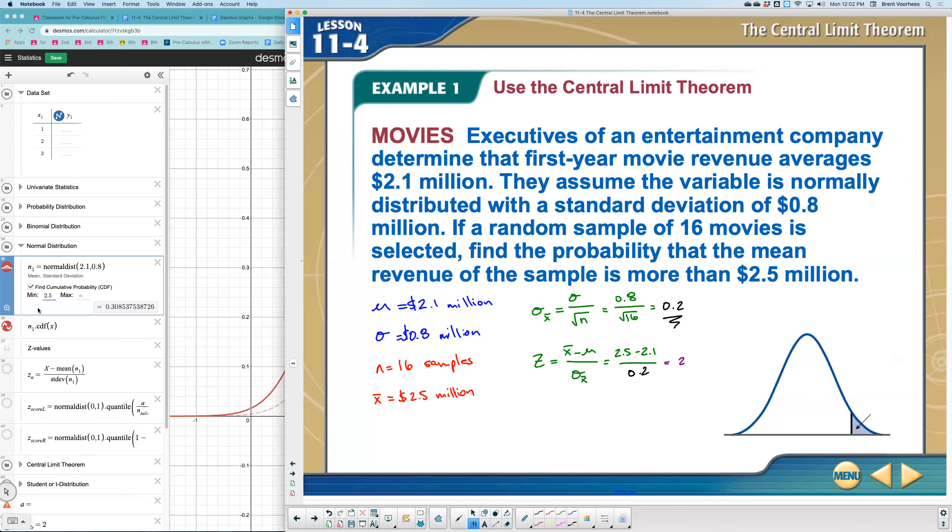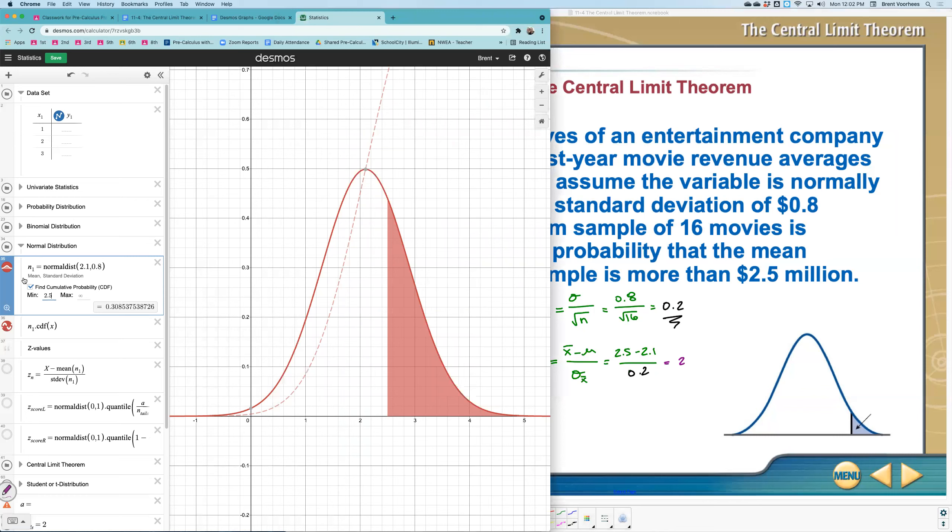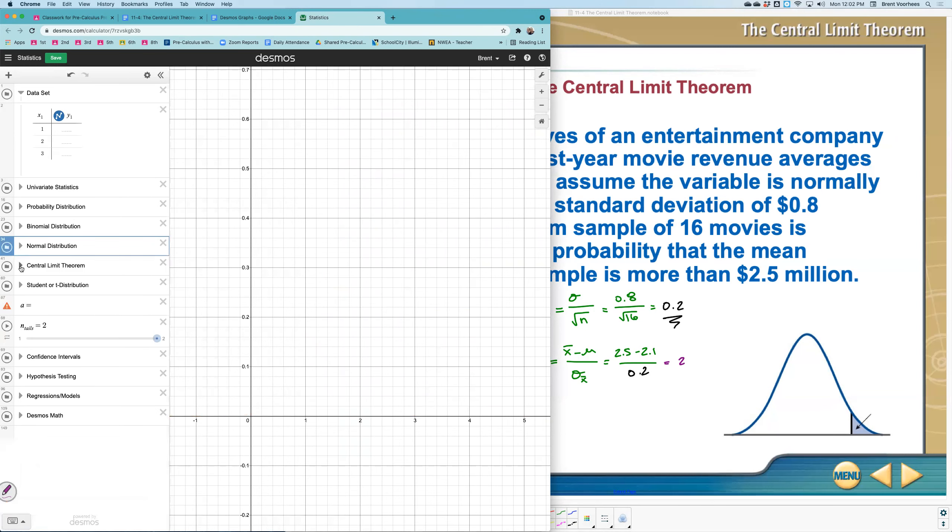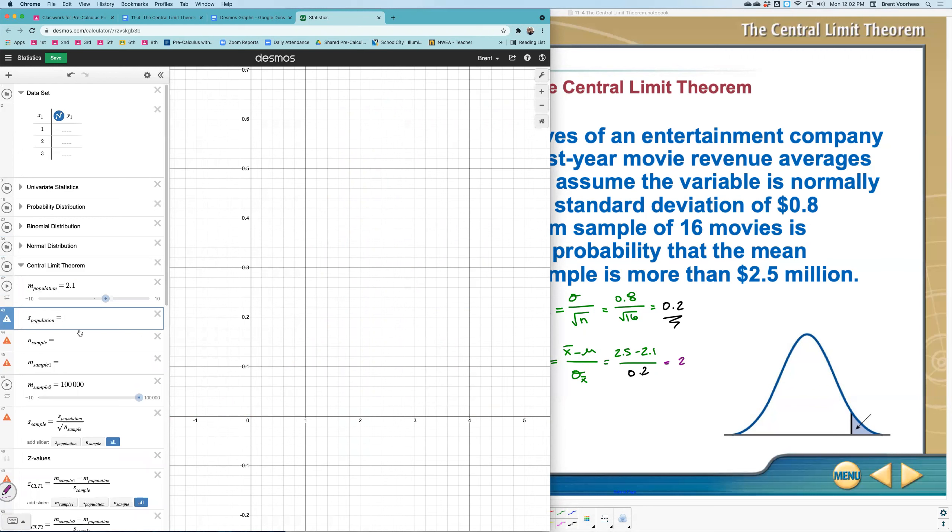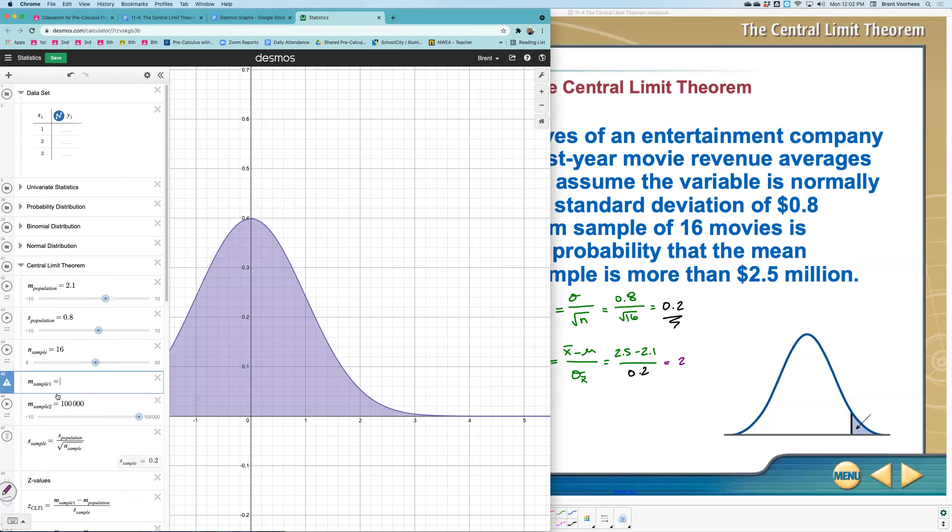What that means is if I go here, that was my curve that's not looking right. I'm going to turn this off for a second. I'm going to go to the central limit theorem and say, okay, the mean of the population was 2.1, my standard deviation of the whole was 0.8, the number of samples is 16, the mean of the sample was 2.5.